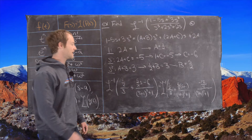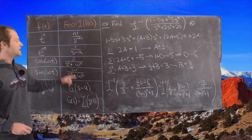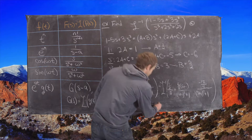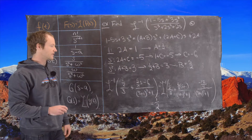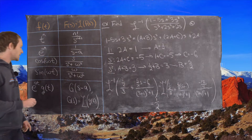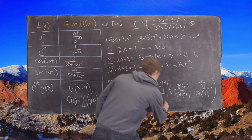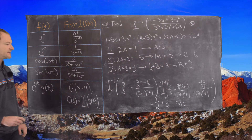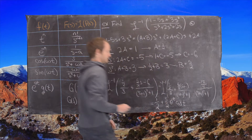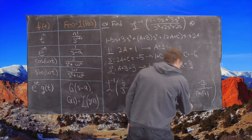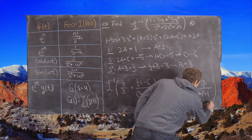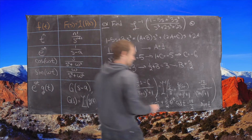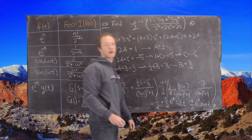Now we can write down the solution using the chart. The inverse Laplace transform of 1 over s is just 1, so the first term gives 1 half. Next, the s plus 1 term looks like cosine, giving 5 halves cosine of t, shifted by e to the minus t. The final term looks like negative 17 over 2 sine of t, also shifted by e to the minus t. That's the final solution.